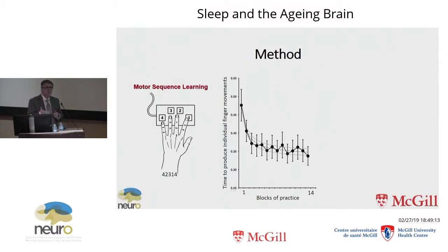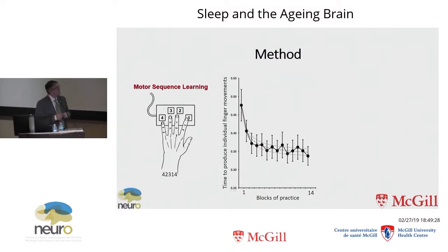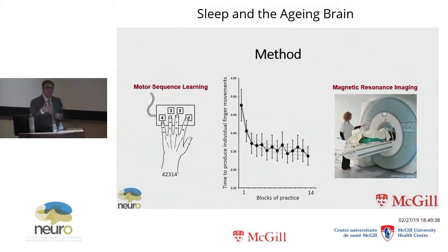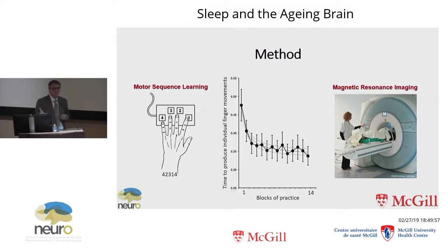With this kind of task, young normal control subjects show very large improvement in performance, as measured by reduction in time to produce the finger movements. It reaches asymptotic performance after 14 blocks of practice. In order to understand the brain structures and brain plasticity that occur during this type of learning, we ask the subject to practice the sequence in a scanner while lying down, and then we record the brain activity of that subject.